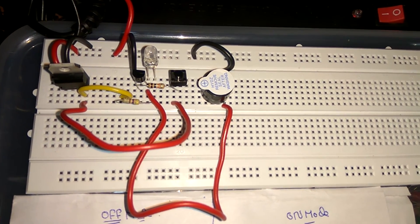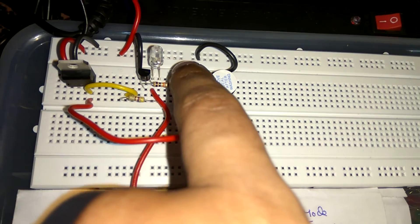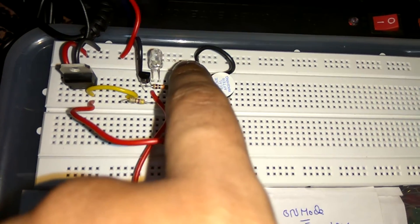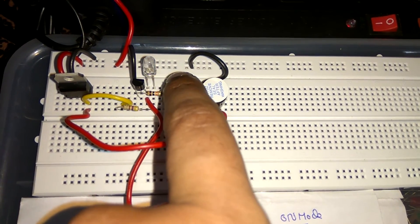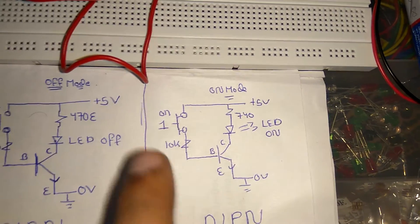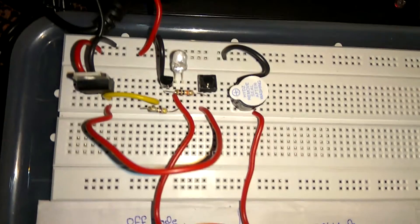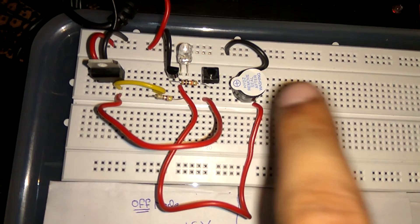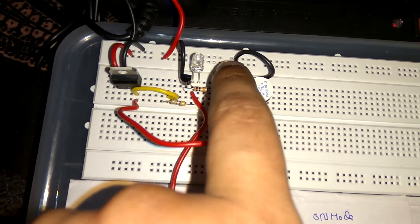Now let's put the transistor in on mode by giving a high signal to the base. I press the switch to give a one to the base. When I give that pulse, the transistor turns on — base is at one, emitter is at zero, so there is a potential difference and current flows through the loop via the buzzer and LED. One — on. Zero — off.